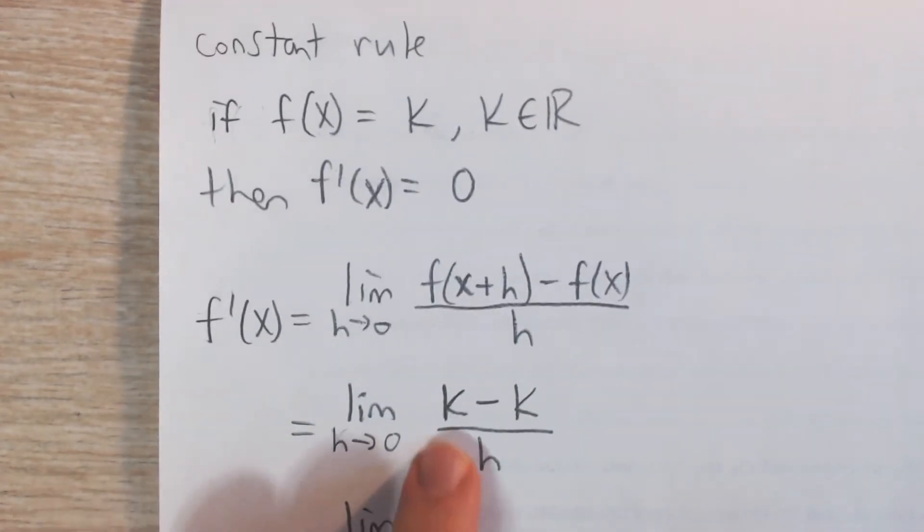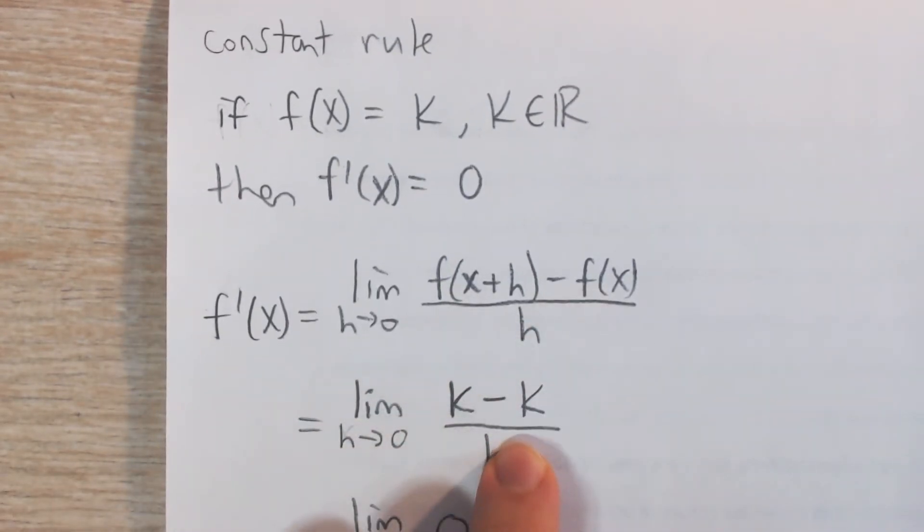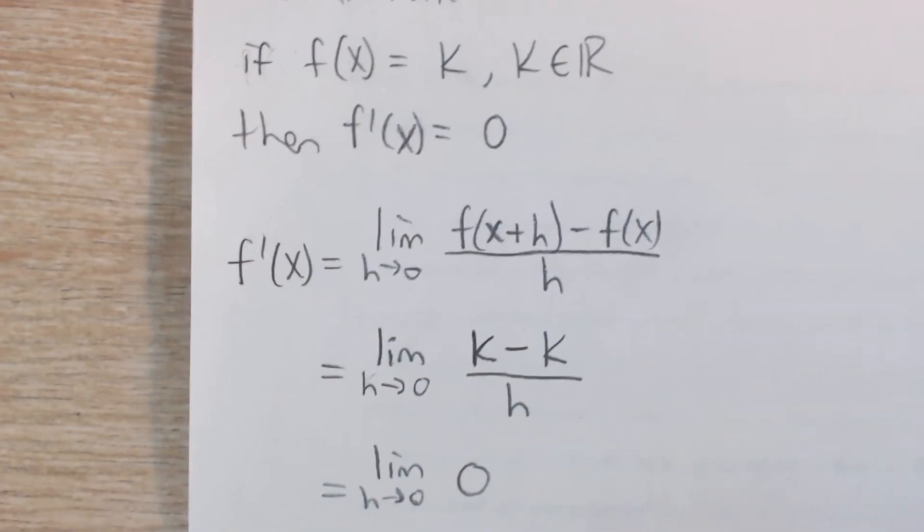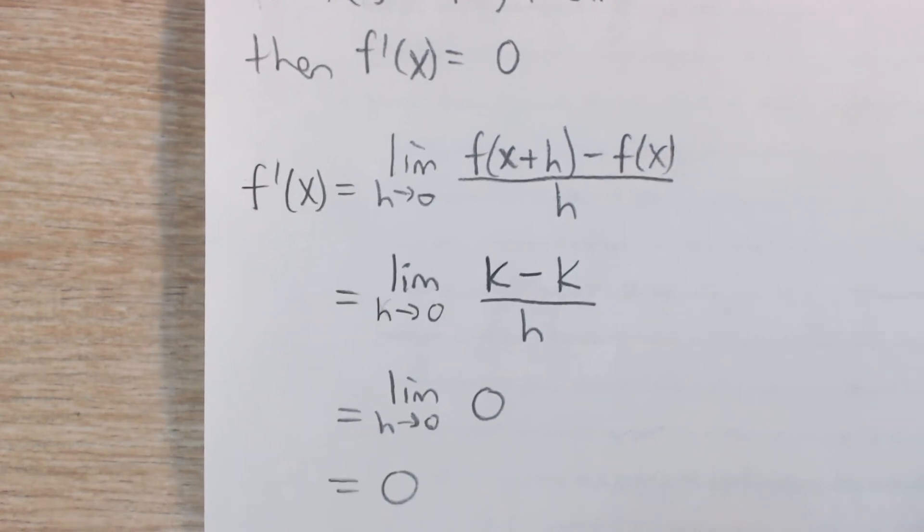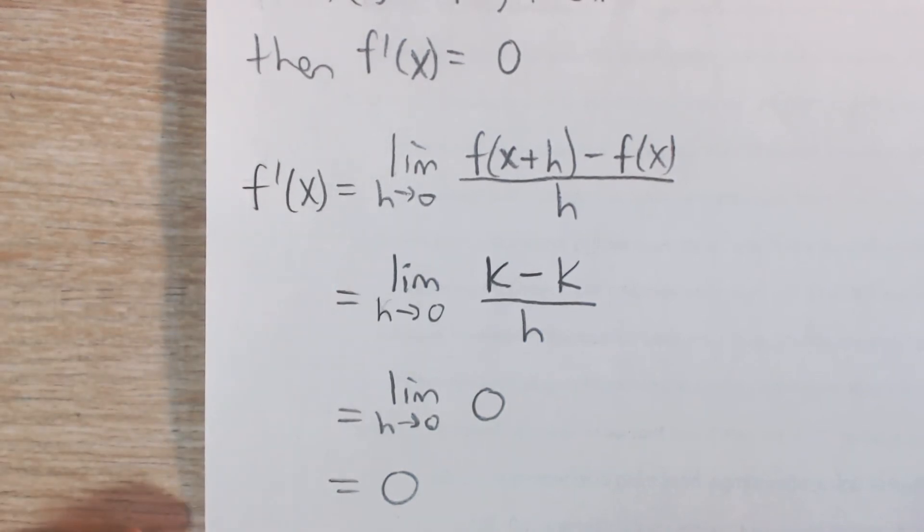So in other words, f(x+h) is k, and f(x), by definition, is equal to k. So we're going to get k minus k, or 0 over h. 0 over h is 0. The limit as h approaches 0 of 0, obviously, is 0. And so we prove that the derivative of this function is 0.